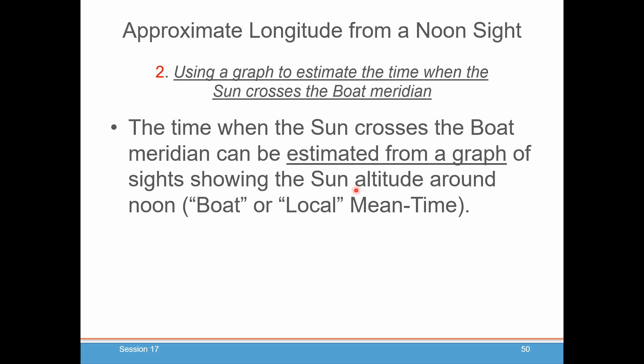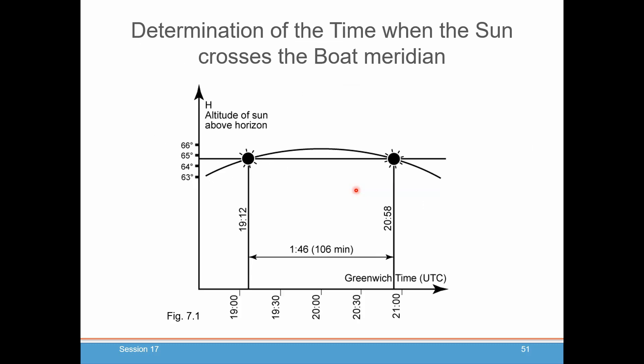So how do we determine that highest point when the sun crossed your meridian? One way, which Dominique presents from his long experience at sea, is to estimate it from a graph of sights showing the sun's altitude around the time of your local noon. Here's the theory: the sun goes up, reaches its highest point, then goes down. If you could tell exactly when it was at a certain height — say about 64 degrees 50 minutes — and again on the way down at that same height, you could average those two times to get the time of your local noon.